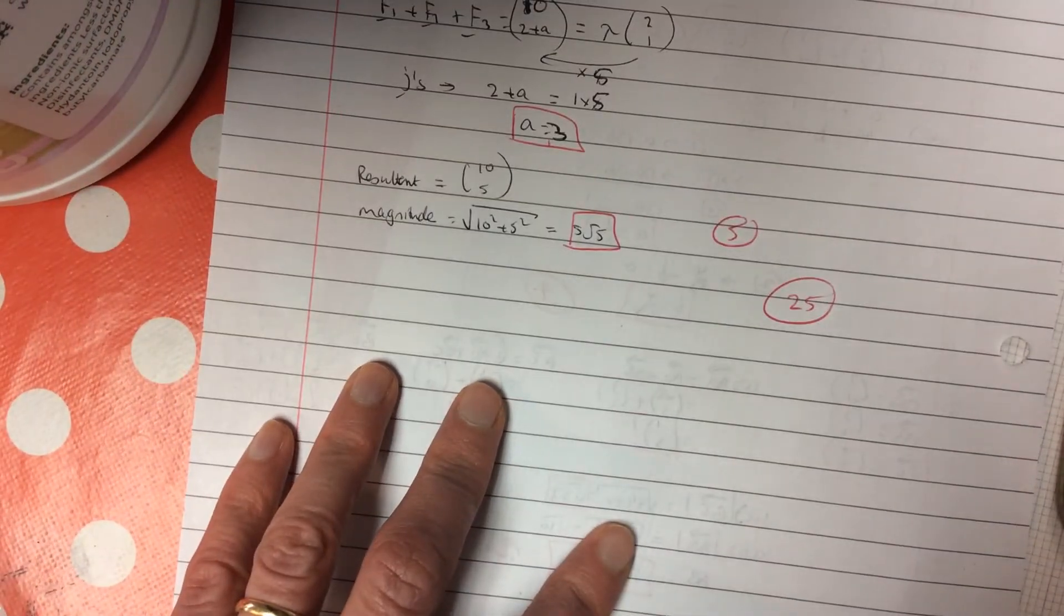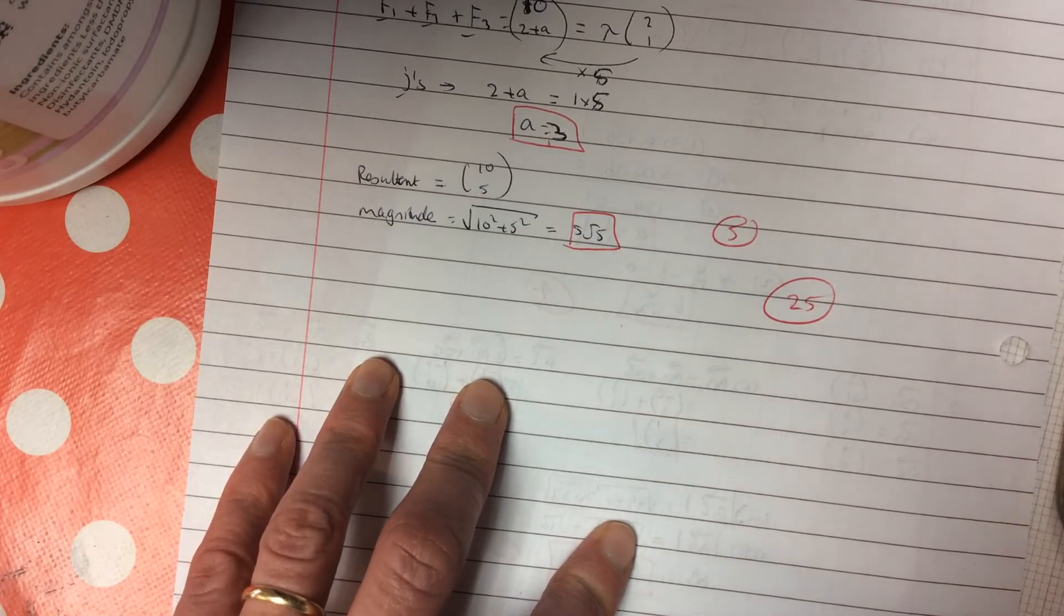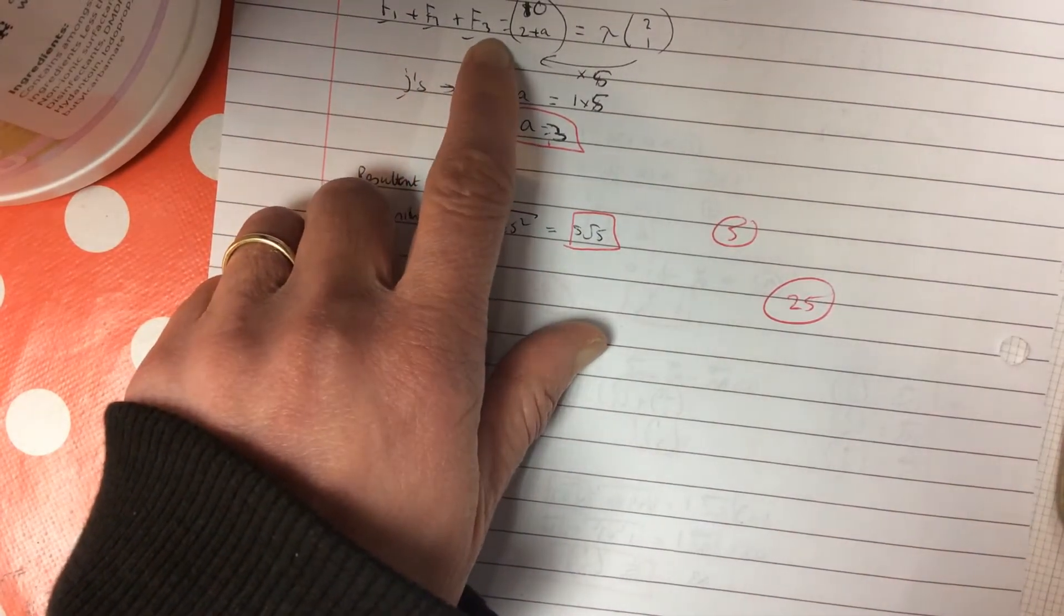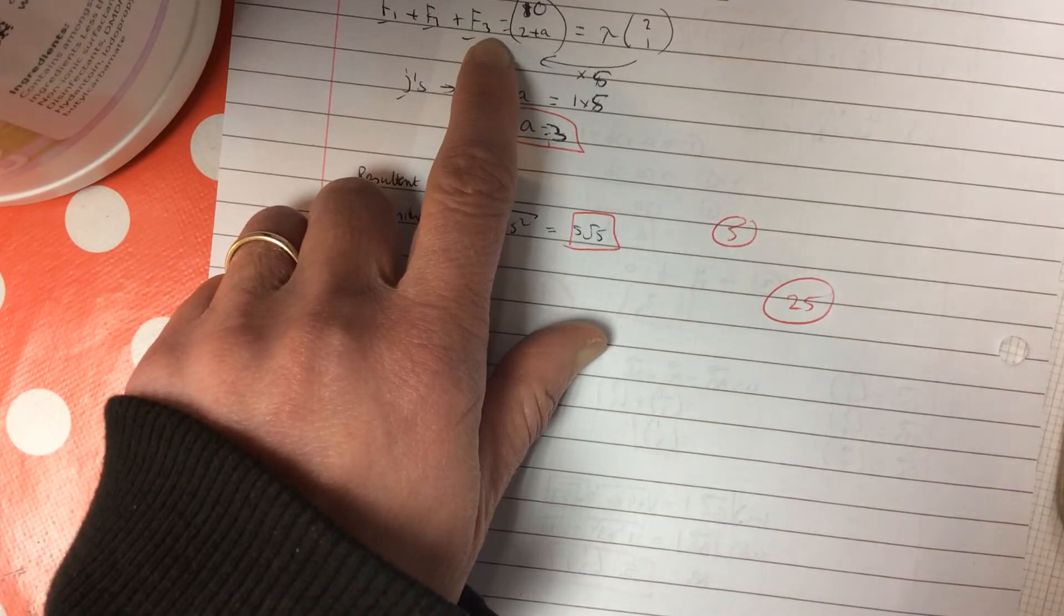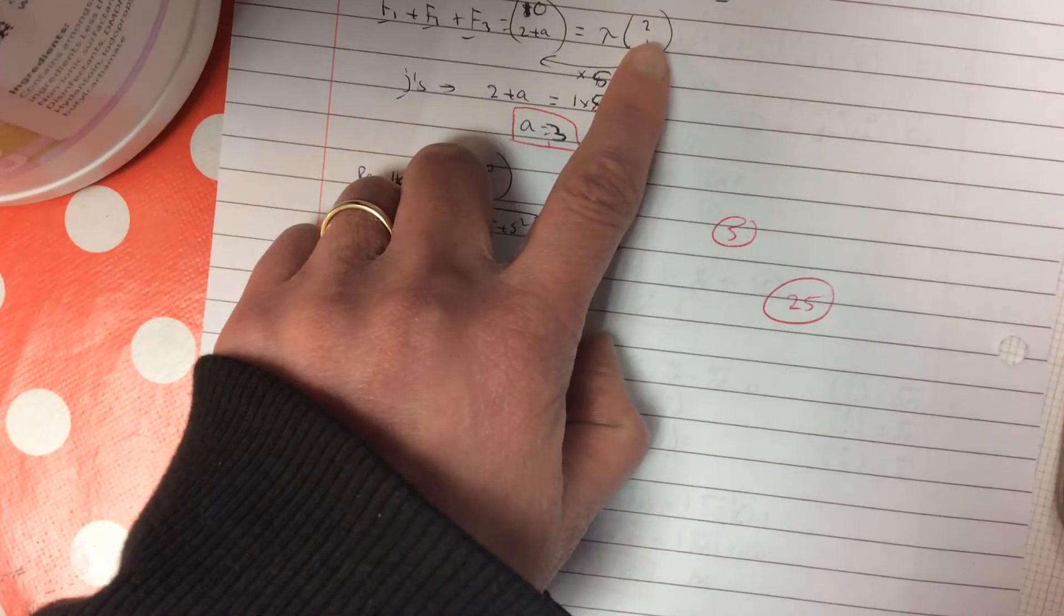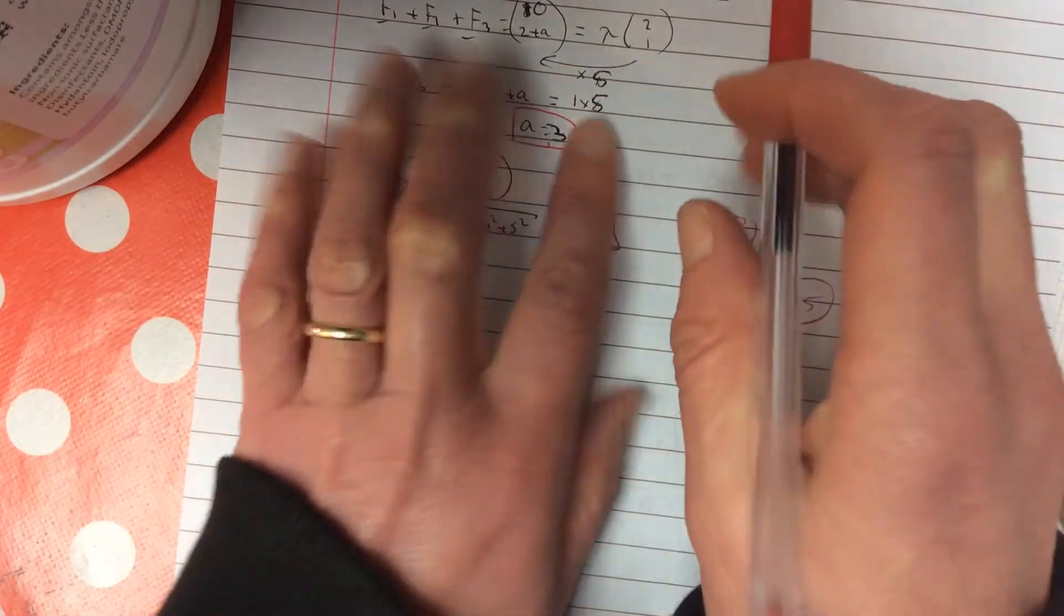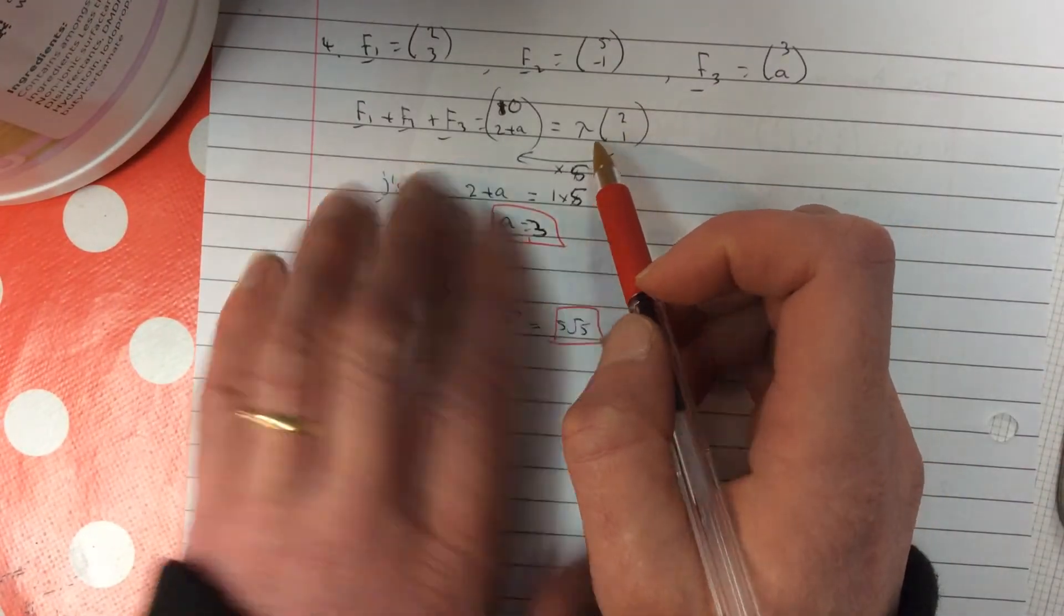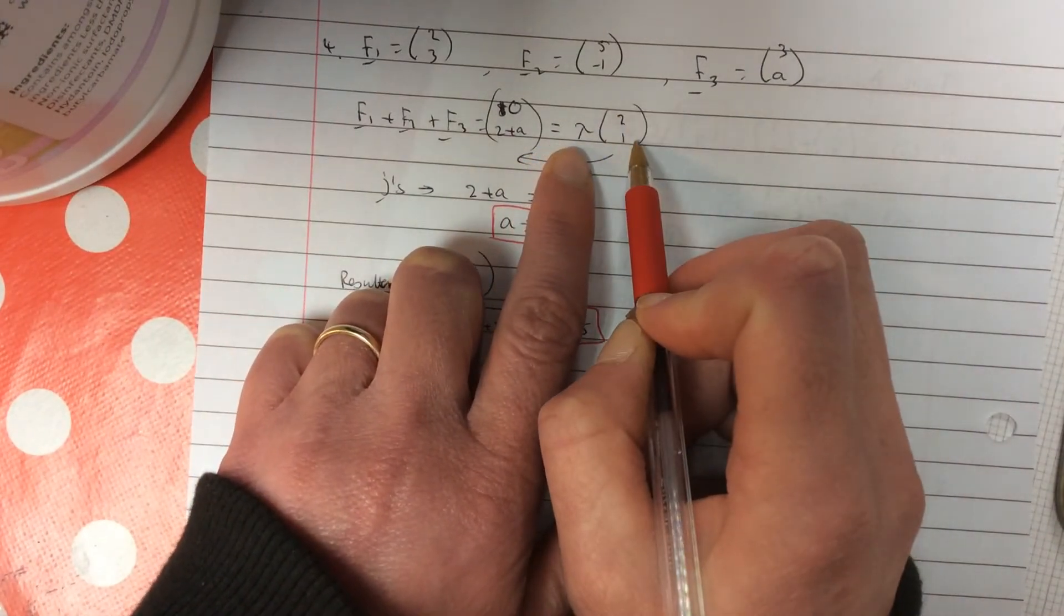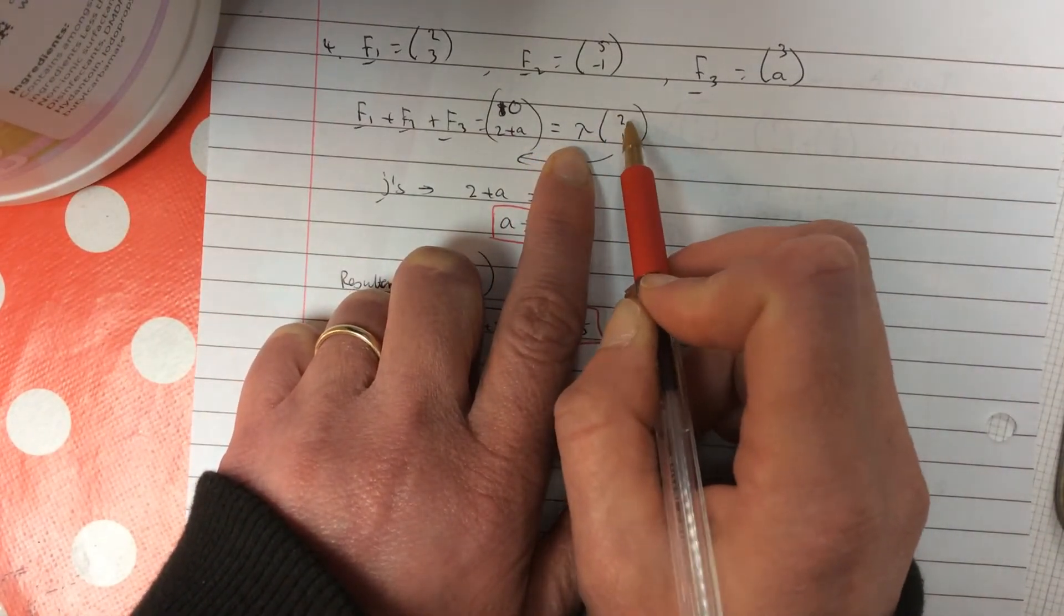And number four. Three forces. The resultant. The resultant is a total. So, that's me adding them. And it acts in the direction of 2I, add J. Right. This is tricky. If you add up all your forces, it acts in this direction. So, it could be a 10, 5.